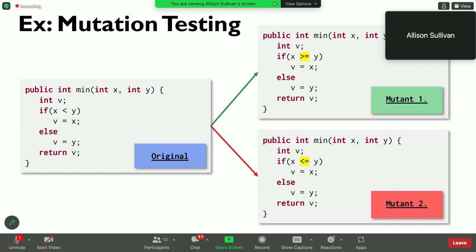For the first mutant, if I have a test where X is zero and Y is one, I'll observe a difference in output. The original will produce zero as a result, and the mutant will produce one.